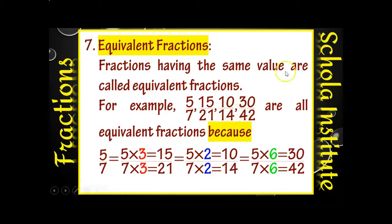30 by 42 के लिए 5 और 7 दोनों को 6 से multiply किया। कहने का मतलब 15 by 21 को cancellation rule apply करें तो 5 by 7 ही आना है। Similarly 10 by 14 और 30 by 42 को simplify करने के बाद भी 5 by 7 ही मिलता है। इसलिए ये चारों equivalent fractions हैं। इस तरह 7 types of fractions explain हो गए।